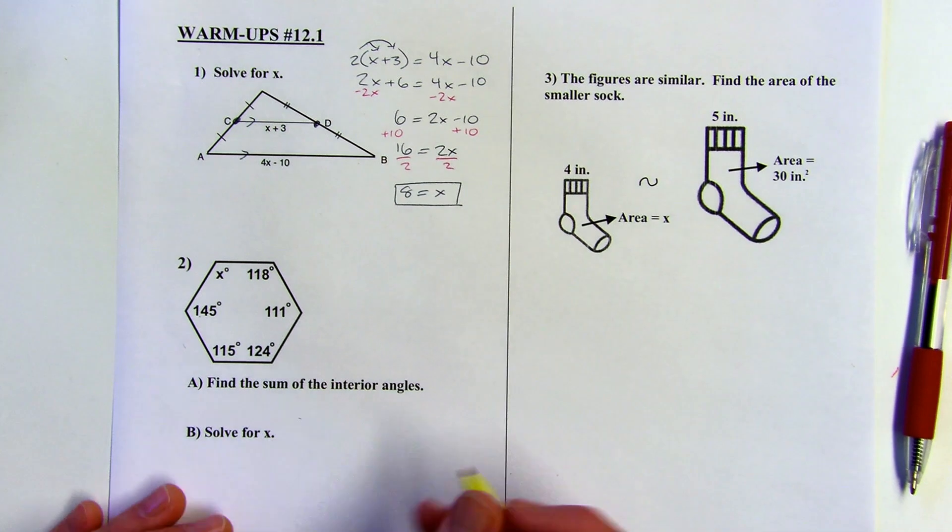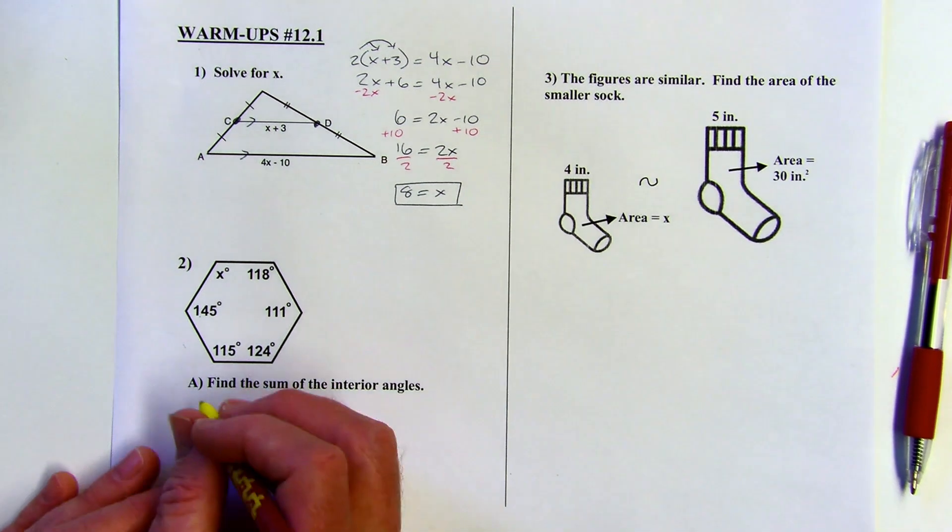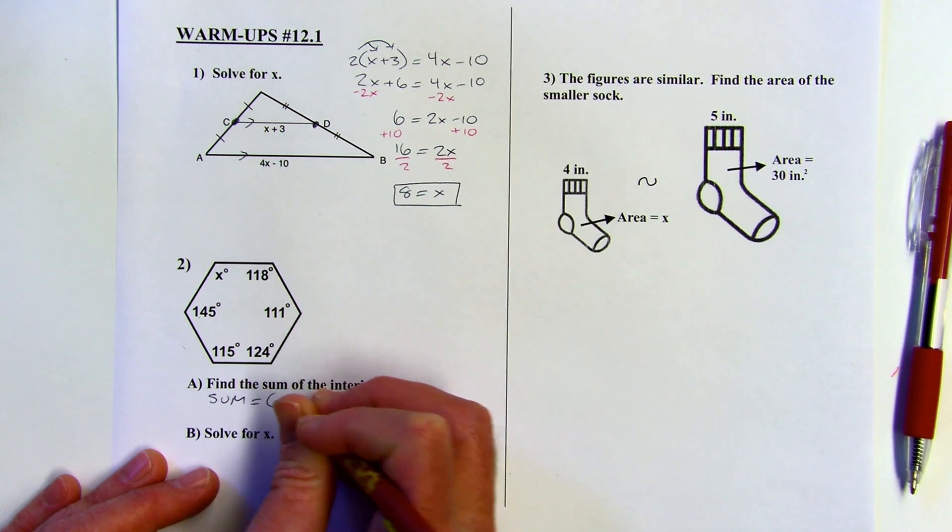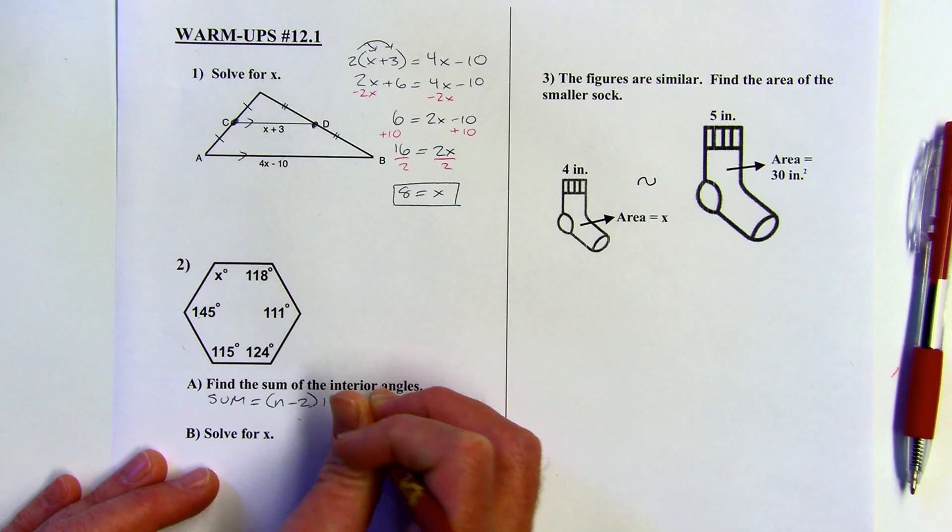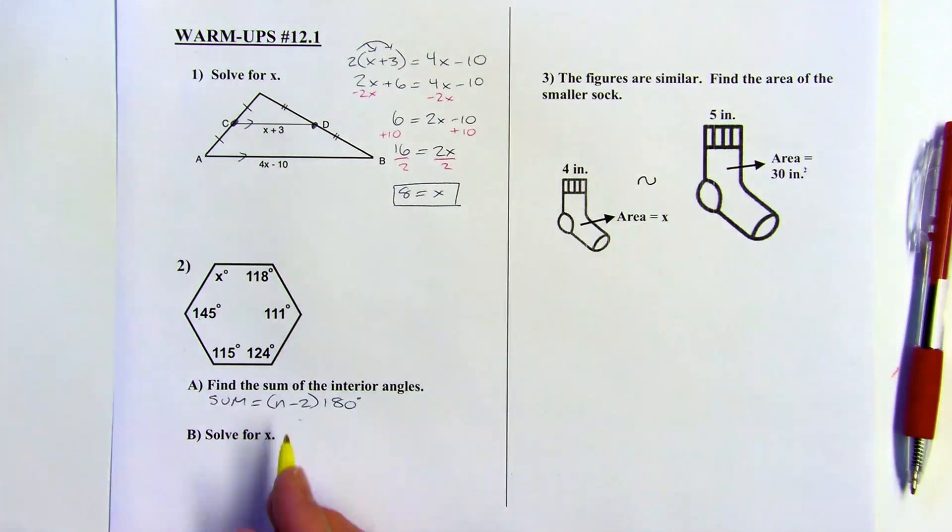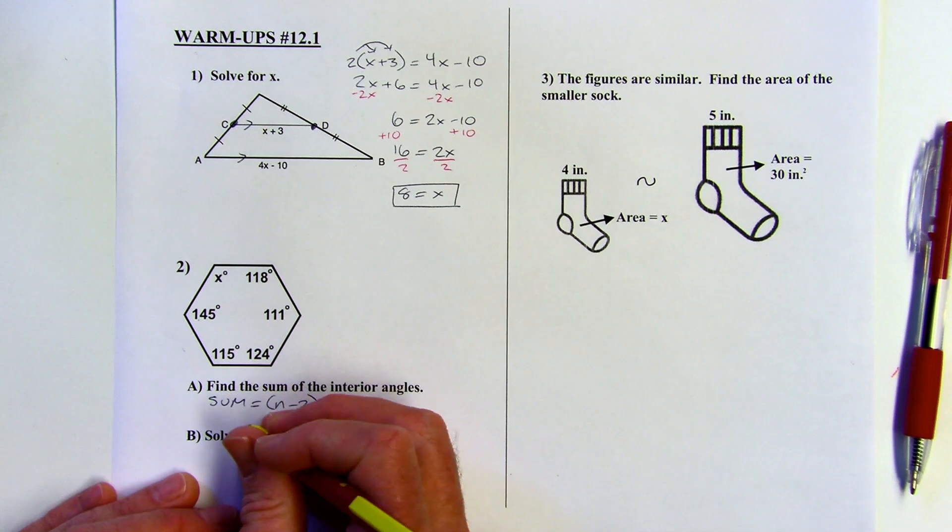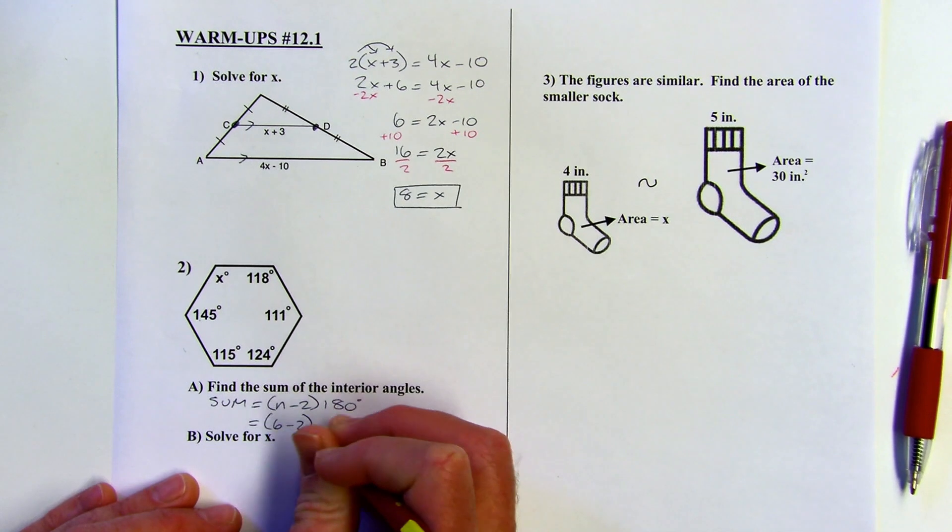So the formula for the sum of the interior angles, the sum is going to equal N minus 2 times 180 degrees. N being the number of sides or the number of angles because the number of sides is the same as the number of angles. So I've got 6 minus 2 times 180.